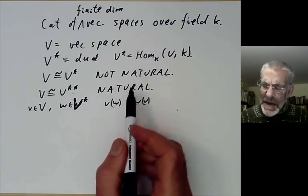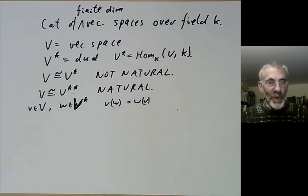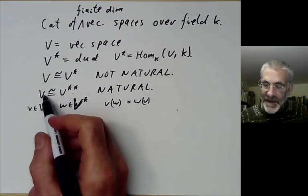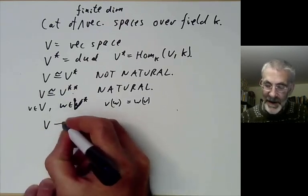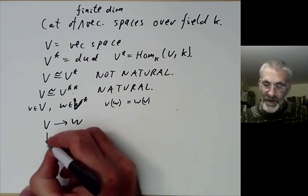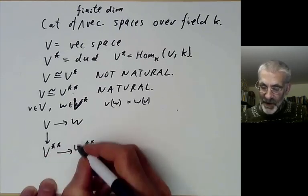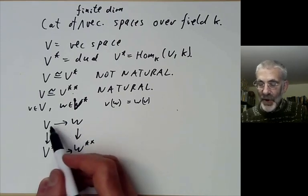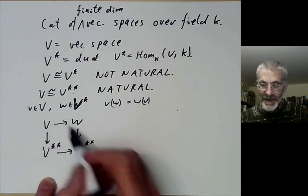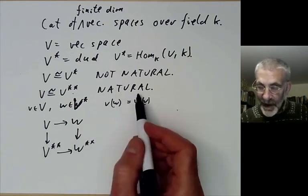The question is: what does the word 'natural' mean? Can we give a rigorous mathematical definition of what it means for this to be natural whereas the other isomorphism isn't? This was answered by Eilenberg and MacLane as follows. Suppose you've got two vector spaces V and W and a linear transformation from V to W, along with maps to their double duals. The key idea is that this square commutes whenever you have a linear transformation from V to W.